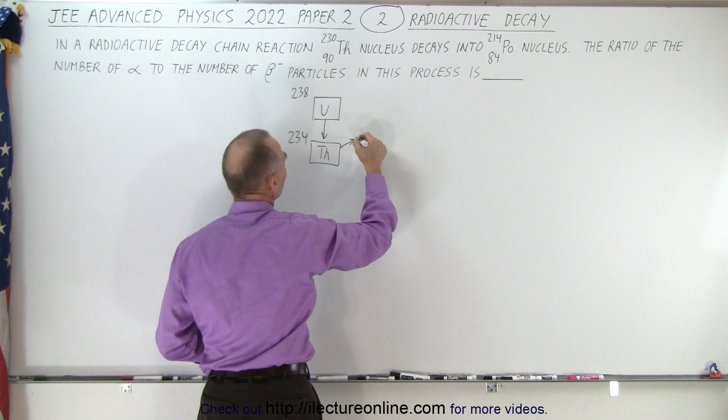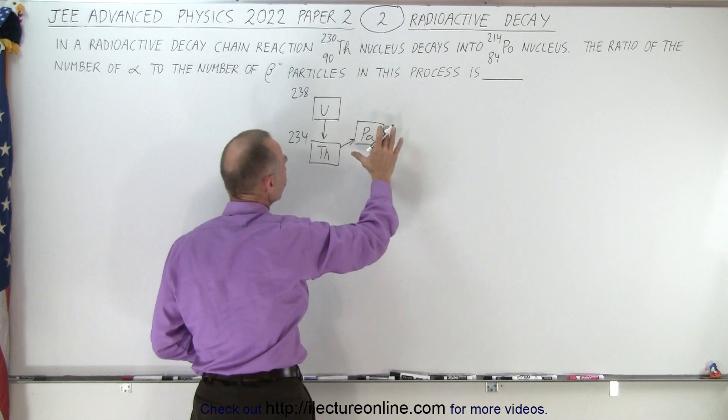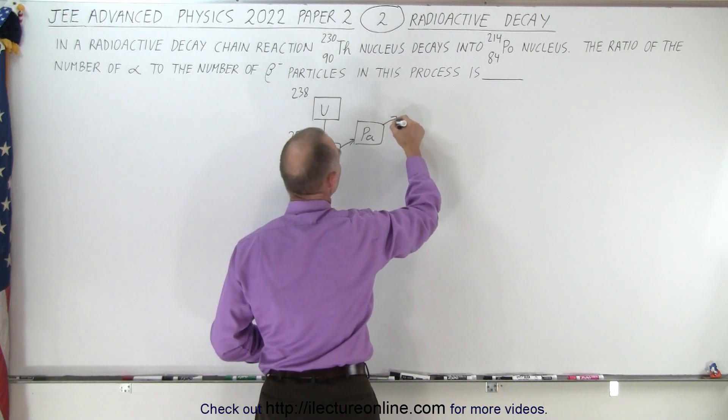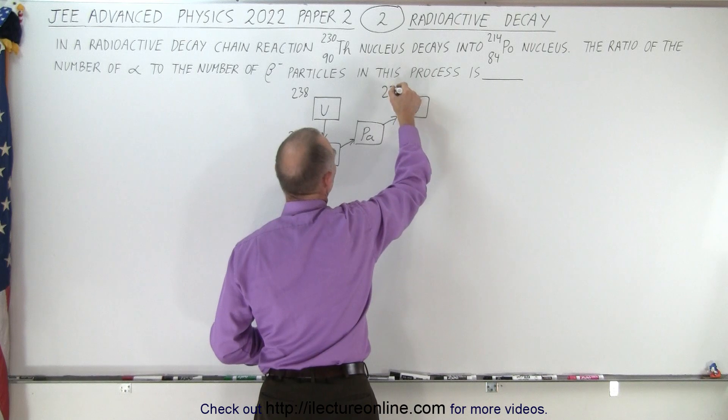Now we have a beta decay to protactinium (PA), there's no change in the nuclear mass, and then there's another beta decay back to uranium, and this uranium is 234.